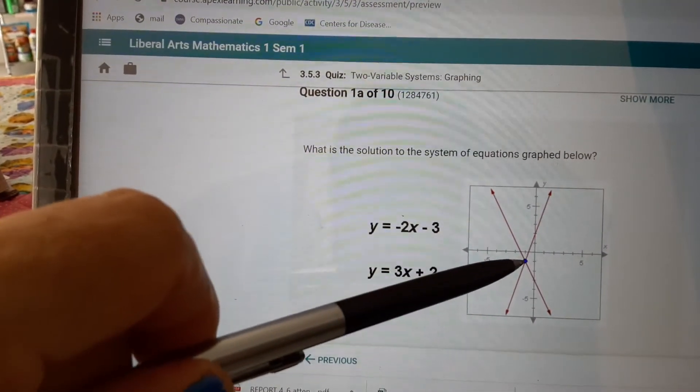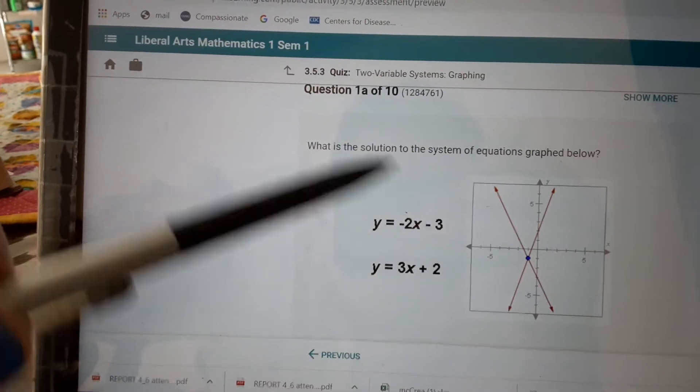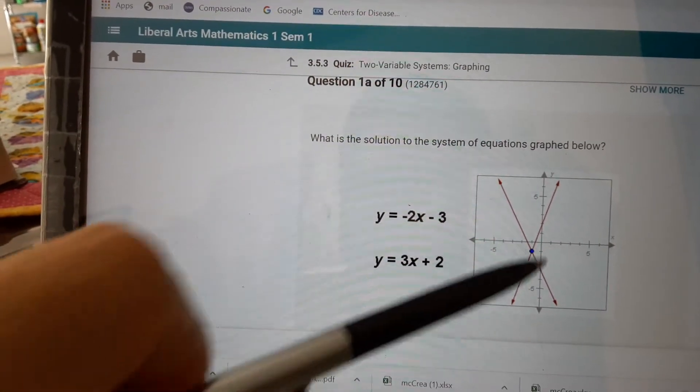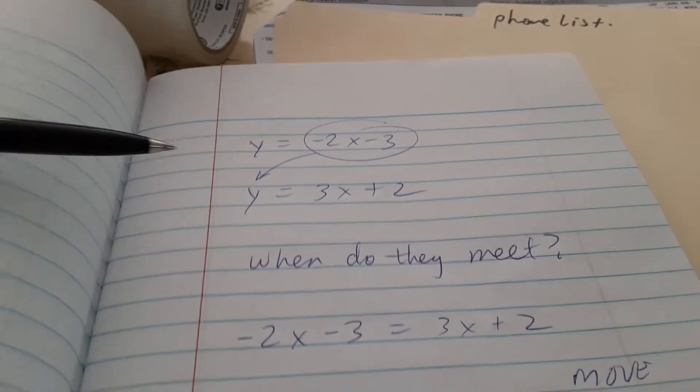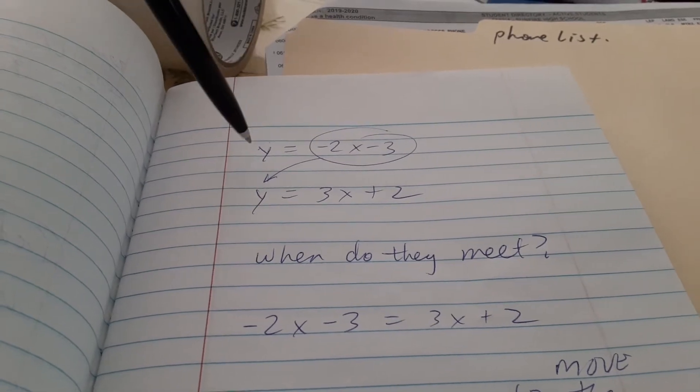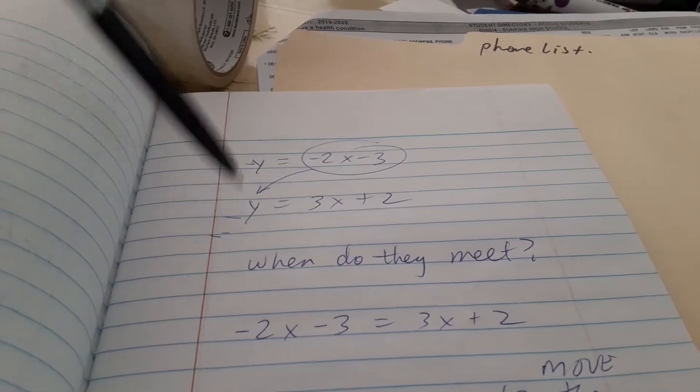Where they meet, that's the solution. So where they meet, it means the y is going to be the same. That's why we say these two will be the same number.